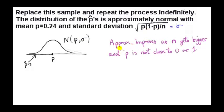As an aside, this approximation to a normal distribution gets better as n gets bigger. We also get a good approximation if P, the unknown population proportion, is not close to 0 or 1.